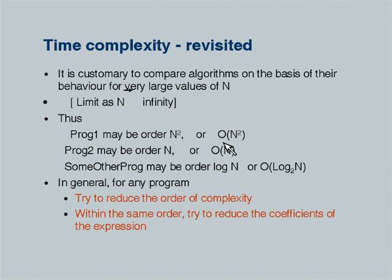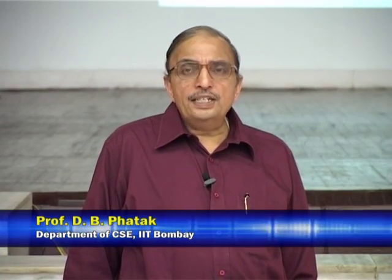Clearly an algorithm with order log n is much superior to an algorithm with order n, which in turn is much superior to order n². What would be a worse algorithm? Order n³, or n⁴, or n⁵. These — n², n³, n⁴, n⁵ — are all polynomial terms. In general, n raised to k where k is a very large integer would be a very complex, very time-consuming algorithm.